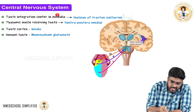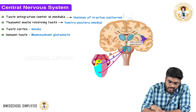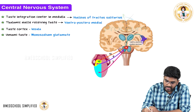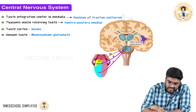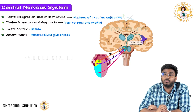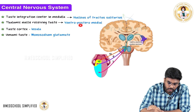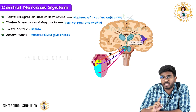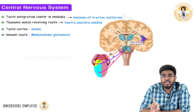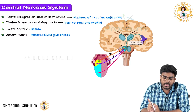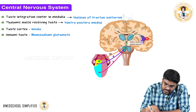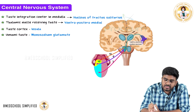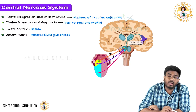To summarize the taste pathway: the taste integration center in the medulla is the nucleus of tractus solitarius. The thalamic nucleus receiving taste is the ventroposteromedial nucleus (VPM), not the VPL. The taste cortex is the insular cortex, which is deep inside the brain. The somatosensory cortex receives touch, pain, and temperature information, while the insular cortex receives taste fibers.